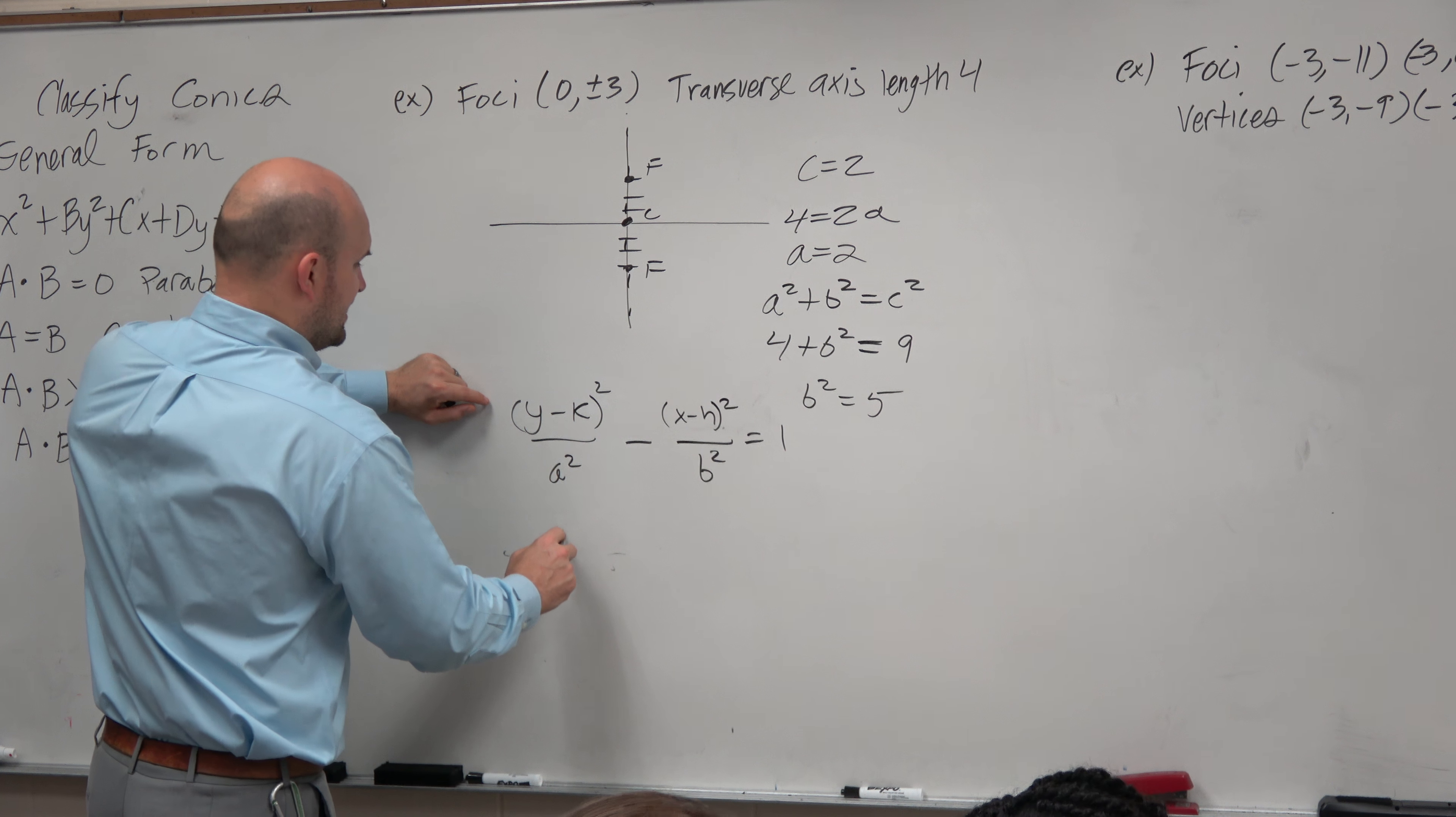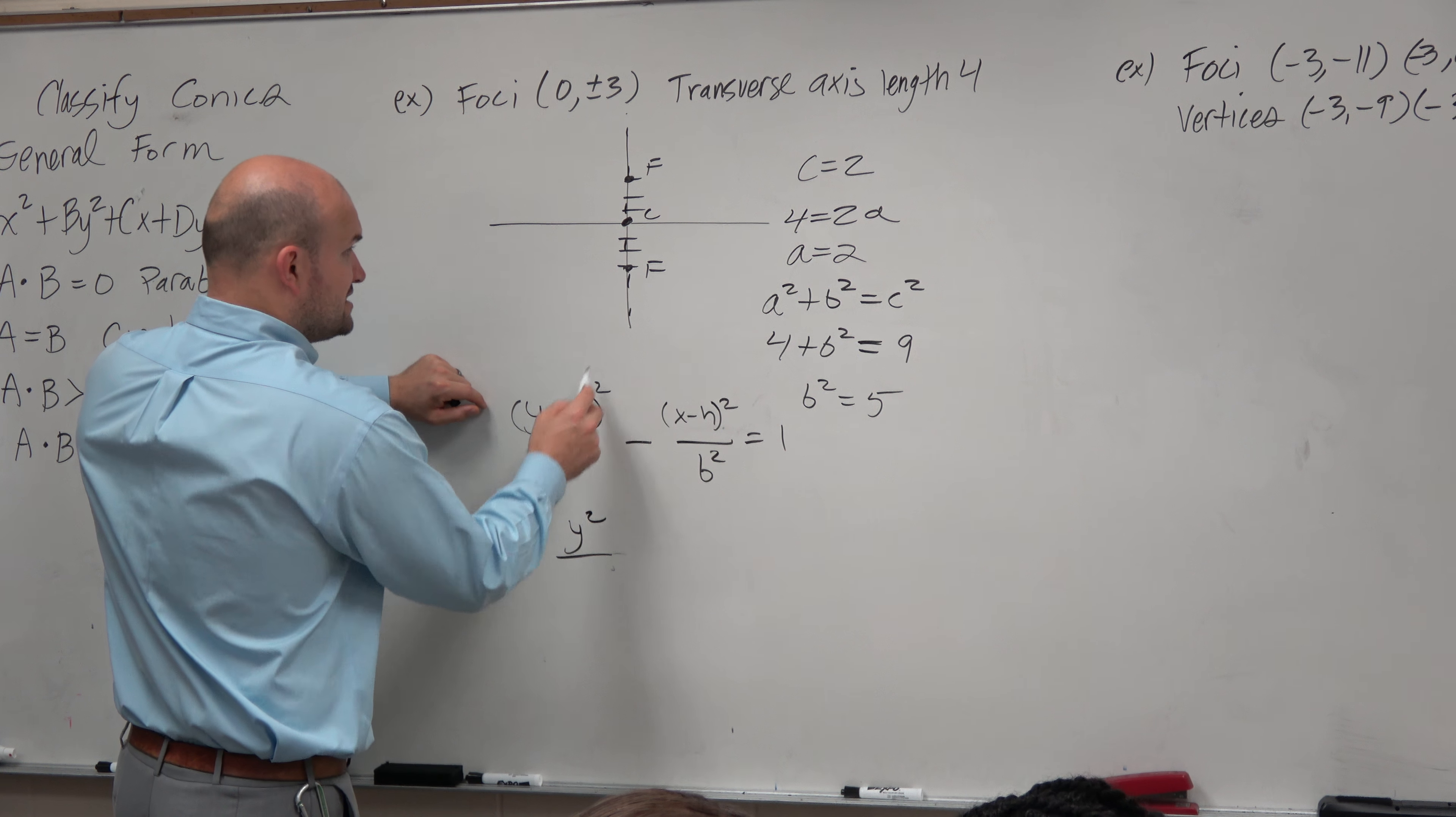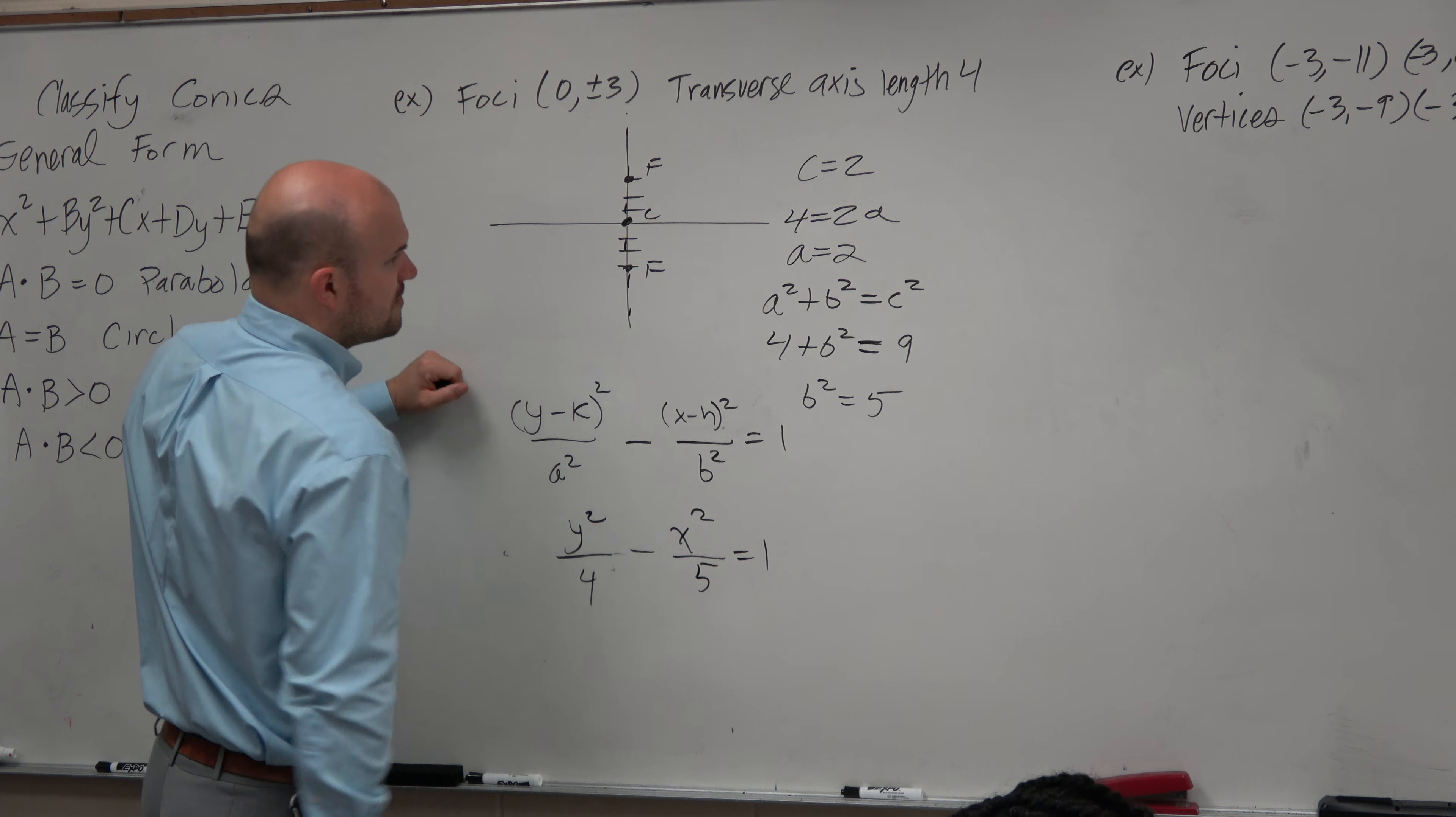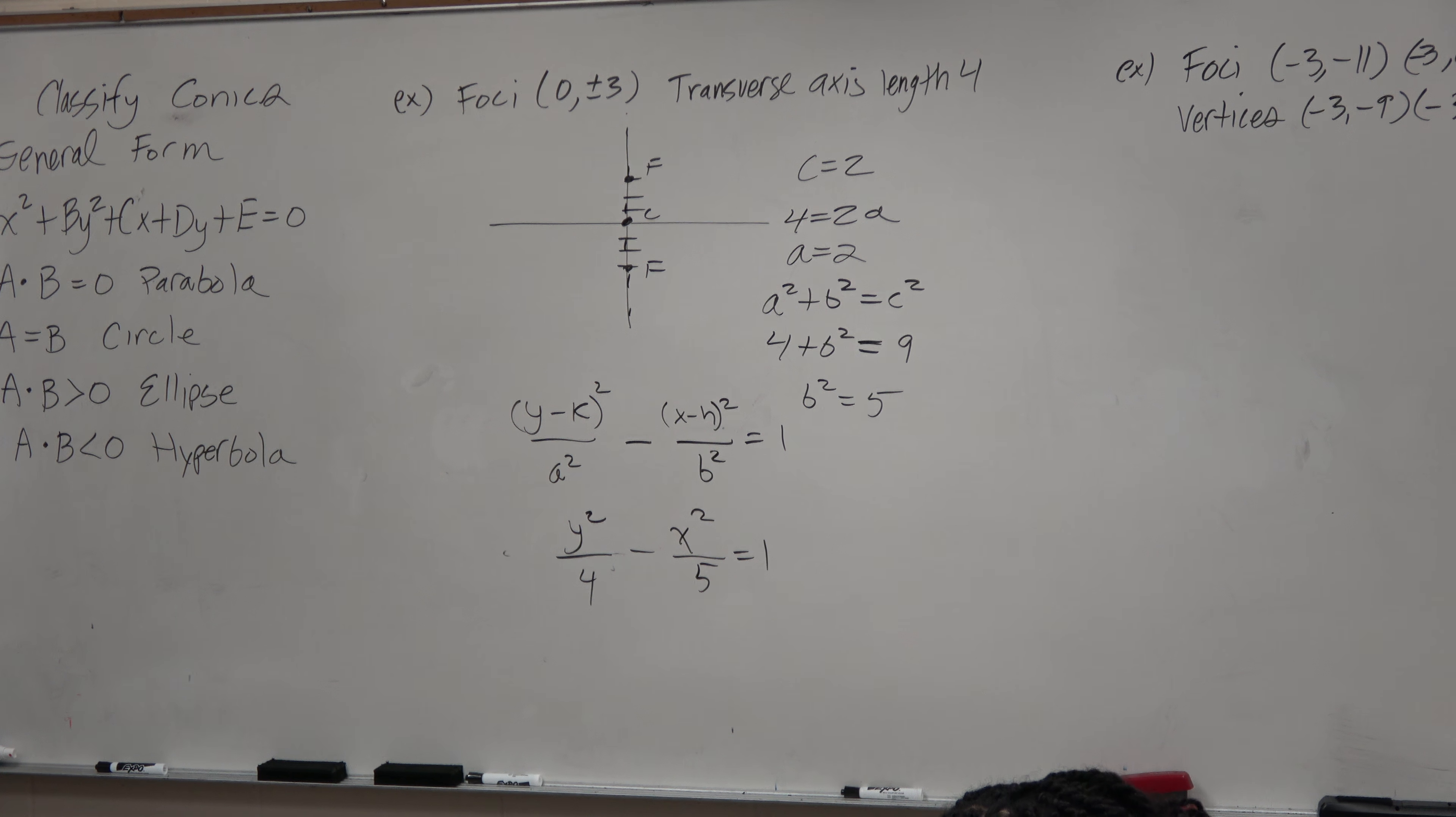So we know that the center is 0, 0. So I'm just going to leave that as y squared. a squared is 4 minus x squared over b squared, which is 5, equals 1. And that's what we call done.